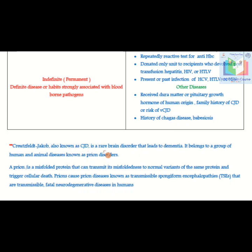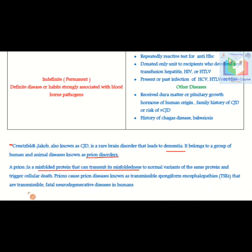Creutzfeldt-Jakob disease (CJD) is a rare brain disorder that leads to dementia. It belongs to a group of human and animal diseases known as prion disorders. A prion is a misfolded protein that can transmit its misfoldedness to normal variants of the same protein and trigger cellular death. Prions cause transmissible spongiform encephalopathies, which are fatal neurodegenerative diseases in humans. Post-translational modification during protein synthesis is thought to be one cause of this disease.